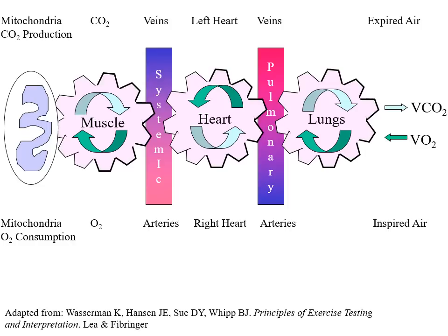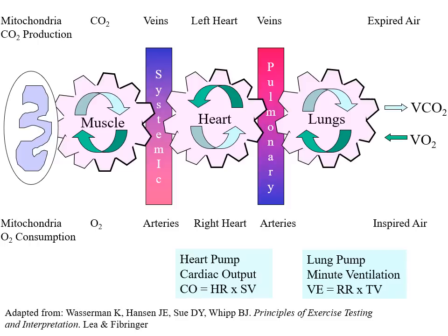Dr. Wasserman's diagram illustrates this beautifully. Your lungs are a pump — you inhale and exhale. The amount of air in and out with a normal breath is tidal volume (TV). At a respiratory rate of 12 breaths per minute times a half-liter tidal volume, that equals about six liters of minute ventilation coming into and going out of your lungs.